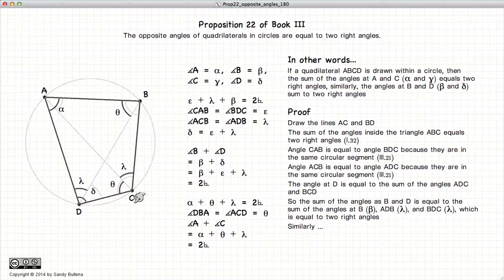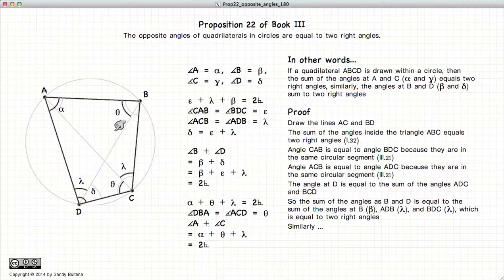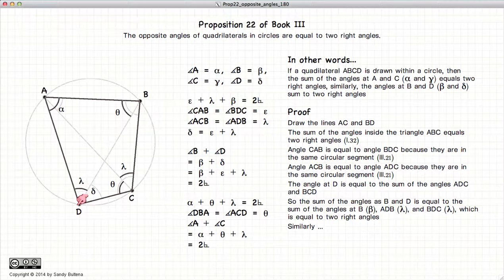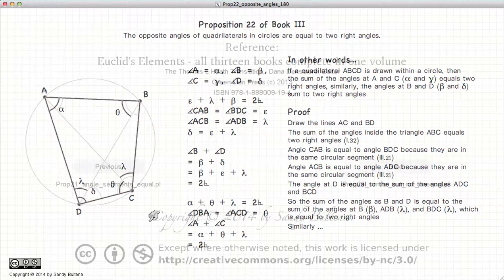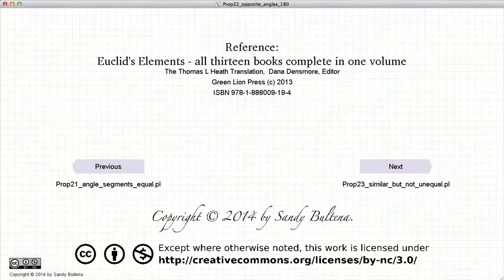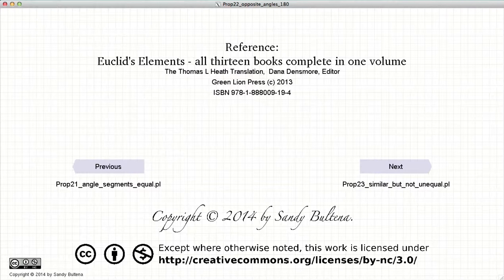And thus we have demonstrated that the opposite angles of a quadrilateral in a circle is equal to two right angles: D plus B, two right angles; A plus C, two right angles. And that concludes this video presentation. To see the next presentation, just click the next button.